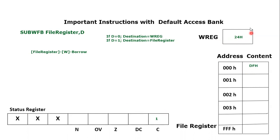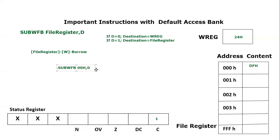Let's say the carry flag is equal to 1, the file register is at address 00 hex with content DF hex, and the working register content is 24 hex. We write the instruction SUBWFB for file register 00 hex, with destination 0 — meaning the destination is the working register.